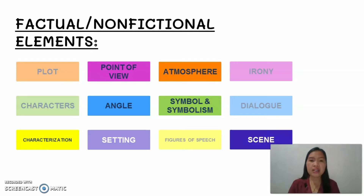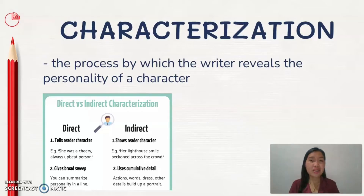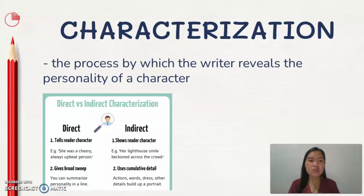We will be discussing characterization, point of view, angle, atmosphere, symbol and symbolism, and scene. Let's begin with characterization. Characterization is the process by which the writer reveals the personality of a character. Characterization has two types: direct and indirect characterization. In direct characterization, the author directly tells the reader certain adjectives that would describe the characters. For example, 'she was a cheery, always upbeat person.' The words cheery and upbeat directly tell the readers the characteristic of that person.